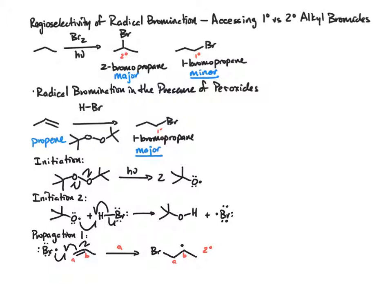The alternative choice is if we formed a bond from bromine to carbon B and the radical ended up on carbon A. This ends up being a primary radical.